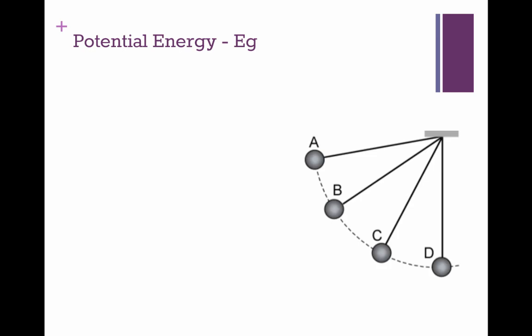So potential energy is Eg. That's its abbreviation. Sometimes you'll see it as PE as well, but we're going to stick with Eg. Energy associated with an object's height above its normal position. That's the definition of potential energy.